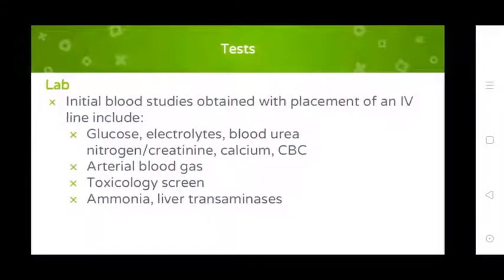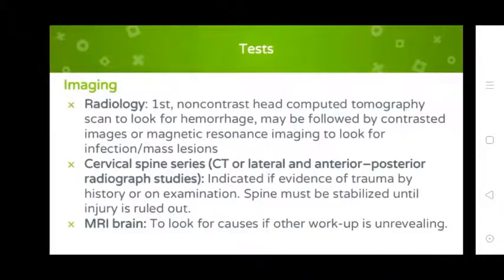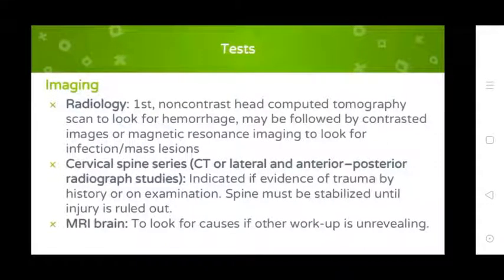Lab investigations: blood drawn at IV line placement for glucose, electrolytes, blood urea nitrogen, creatinine, calcium, CBC, coagulation studies, ABG, toxicological screen, ammonia, and liver transaminases. Imaging: first obtain non-contrast head CT scan; may be followed by contrast images. MRI to look for infection or mass lesion. Cervical spine series: CT and lateral/anteroposterior radiograph indicated if evidence of trauma. Spine must be stabilized.